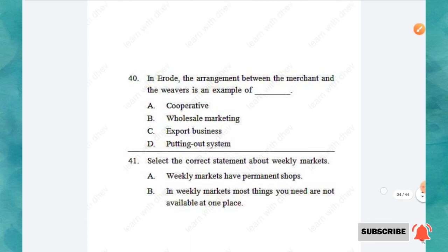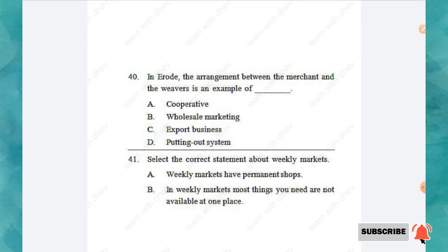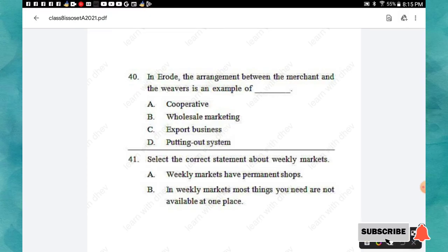Question 40: In the weaving trade, the arrangement between the merchant and the weavers is an example of — cooperative, wholesale marketing, export business, or putting-out system? The right answer is option D: putting-out system.